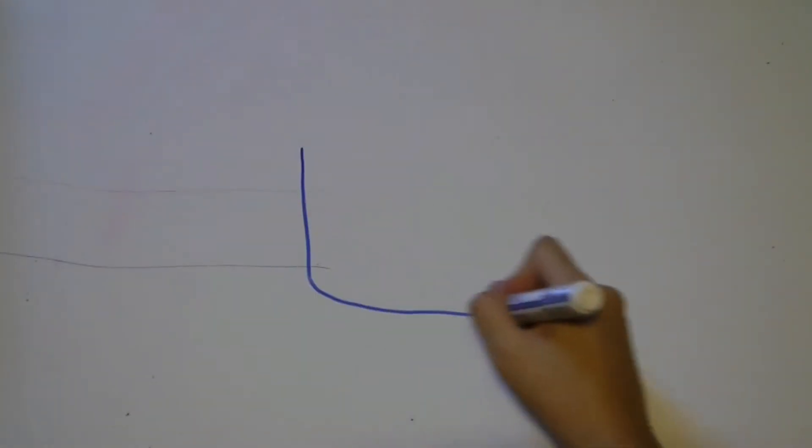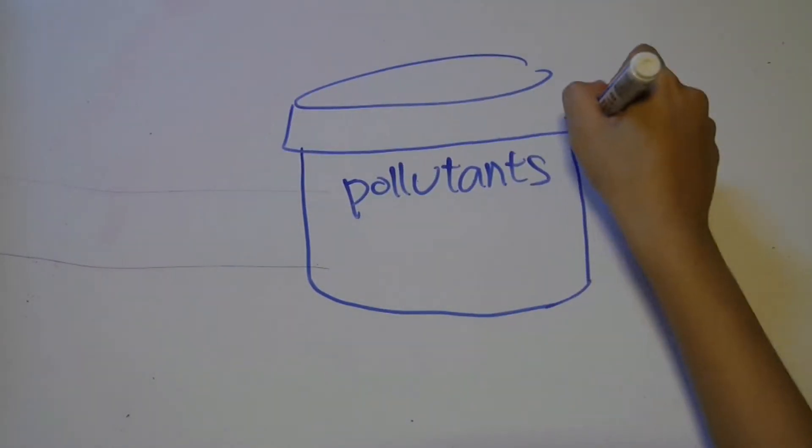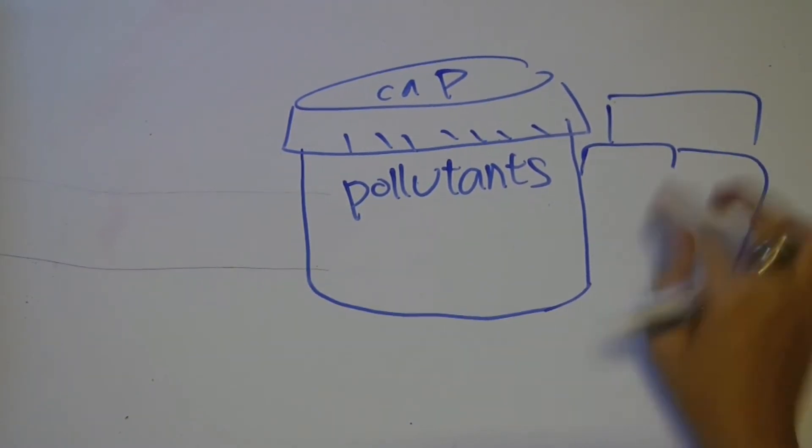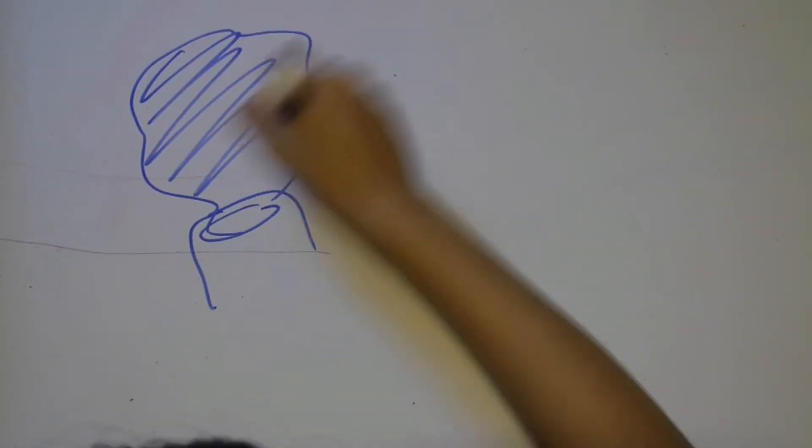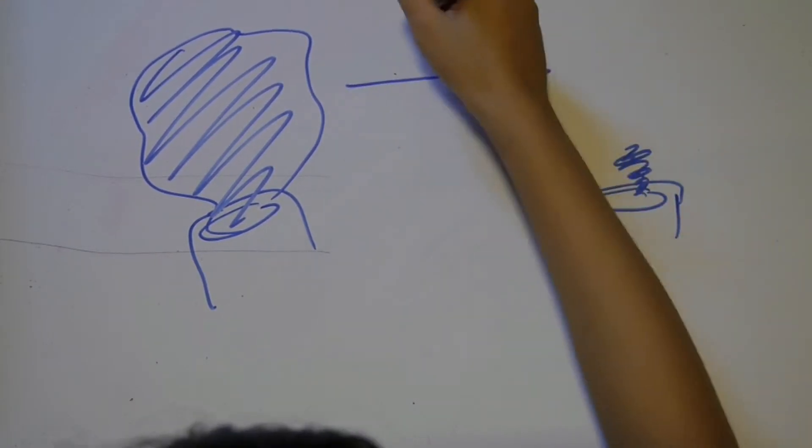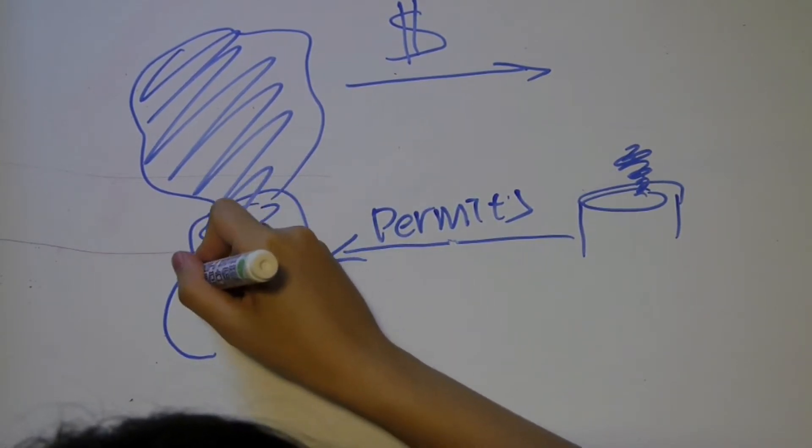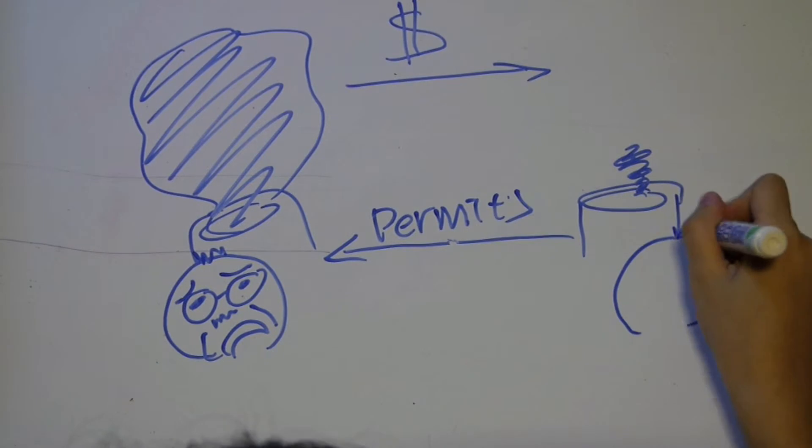For the cap and trade scheme, a central authority sets a cap on how much pollutants may be emitted. Emission permits give the firm the right to emit a certain amount of pollutants. The total number of permits issued to all companies cannot exceed the emissions cap, and firms that need to increase their emission permits must buy them from companies that require fewer permits. This means that permit buyers are paying more for polluting more, while permit sellers are being rewarded for reducing emissions.